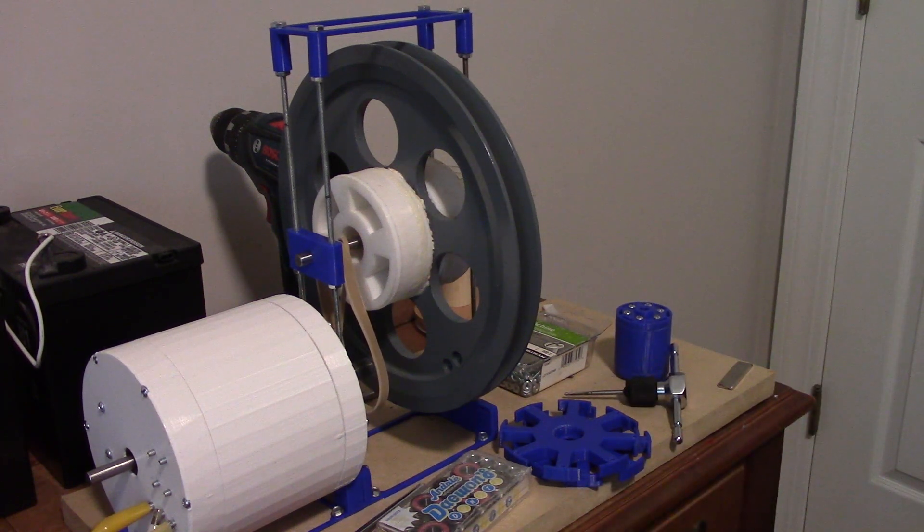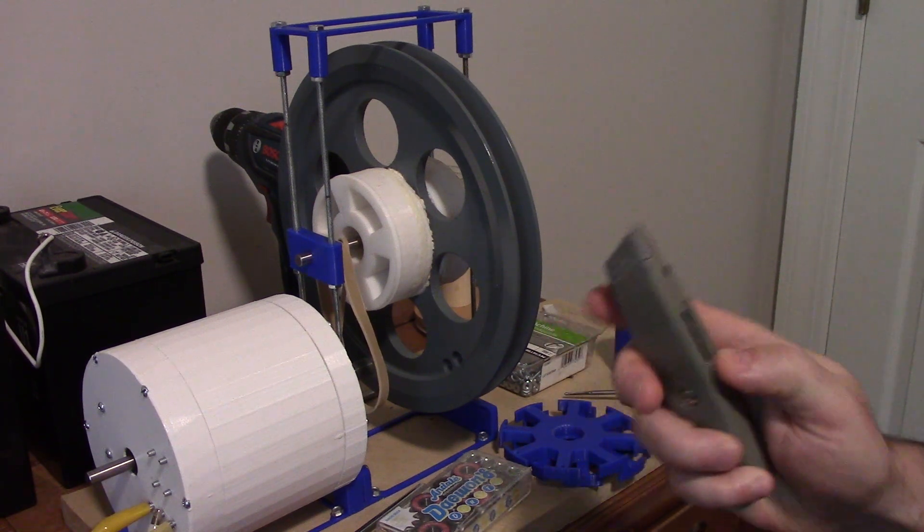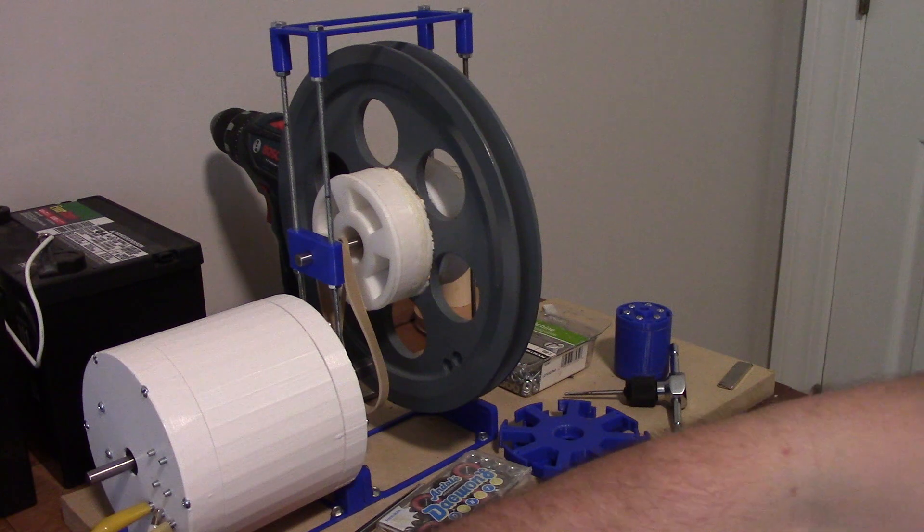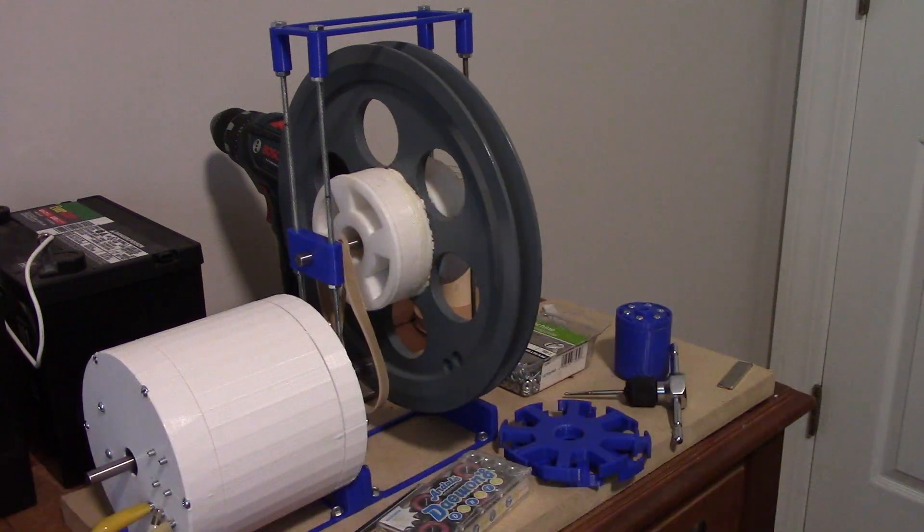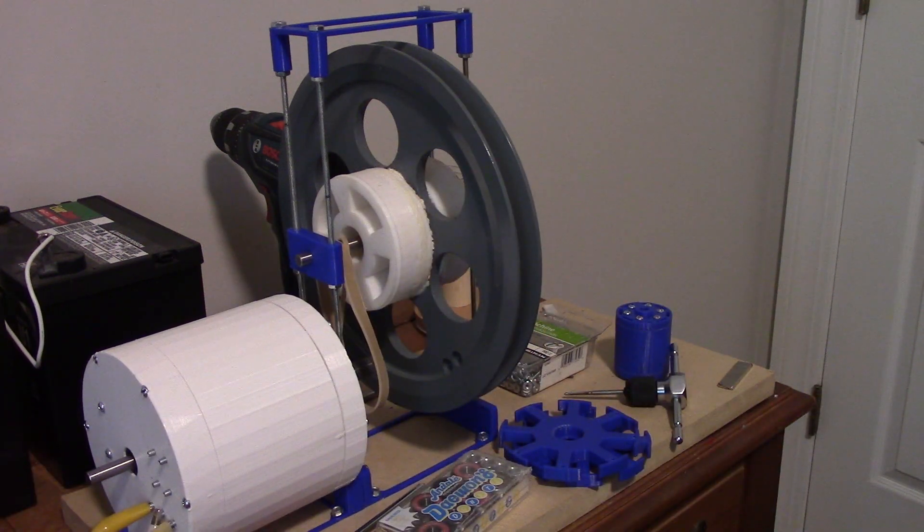I think most everybody that's got an FDM printer, normally your bottom one or two layers is kind of flattened out. So you'll have to go through and either trim with a box cutter or sand or both to get that layer flush with the rest of the layers.